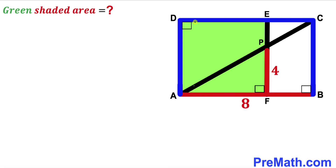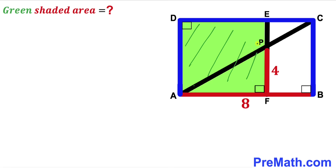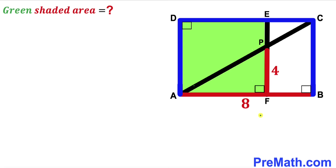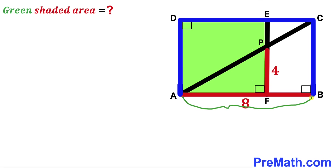Welcome to pre-math. In this video we have got this big blue rectangle ABCD that consists of two rectangles: the green shaded rectangle AFED and the small rectangle FBCE, as shown in the diagram. AC is the diagonal for the blue rectangle, the base AB length is 8 units, PF length is 4 units, and our task is to calculate the area of the green shaded rectangle AFED.